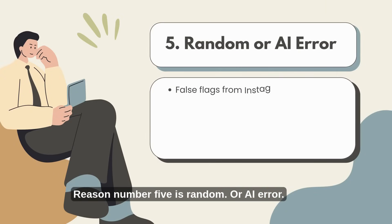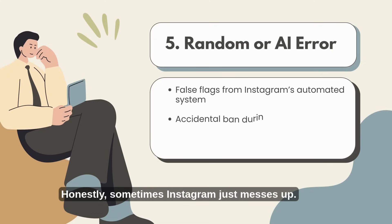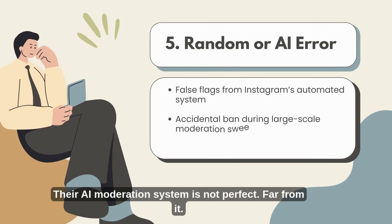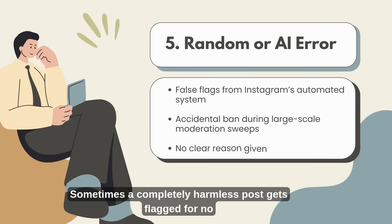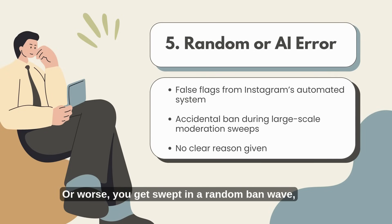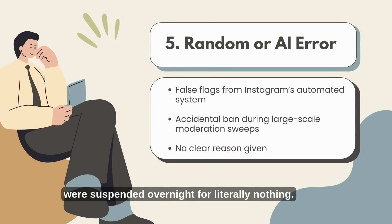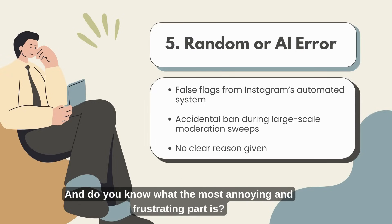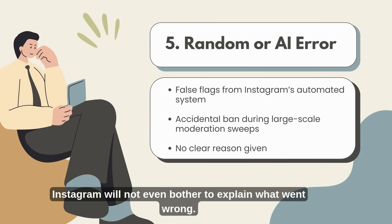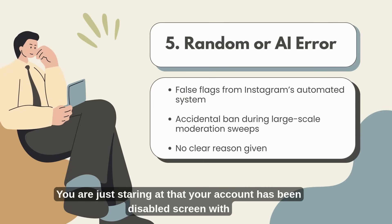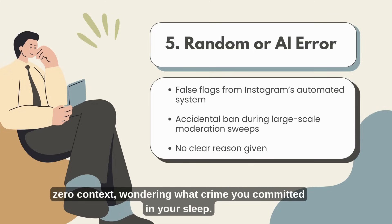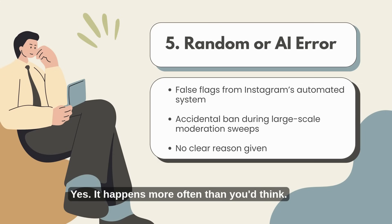Reason number five is random or AI error. Honestly, sometimes Instagram just messes up. Their AI moderation system is not perfect — far from it. Sometimes a completely harmless post gets flagged for no good reason, or worse, you get swept in a random ban wave, like the 2022 glitch where a lot of Instagram accounts were suspended overnight for literally nothing. And the most annoying part? Instagram will not even bother to explain what went wrong. You're just staring at the 'your account has been disabled' screen with zero context, wondering what crime you committed in your sleep.